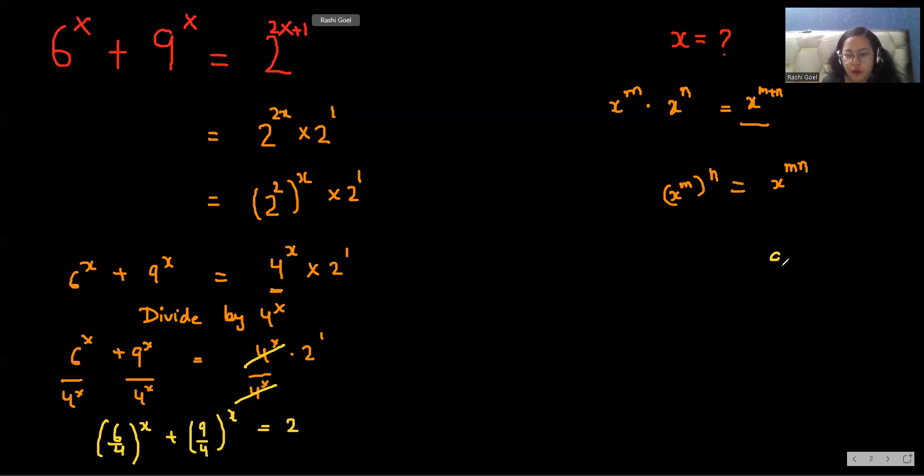Now 9/4 we can write it as (3/2)^2, and this 6/4, when we divide by 2, we get (3/2)^x plus 9/4.